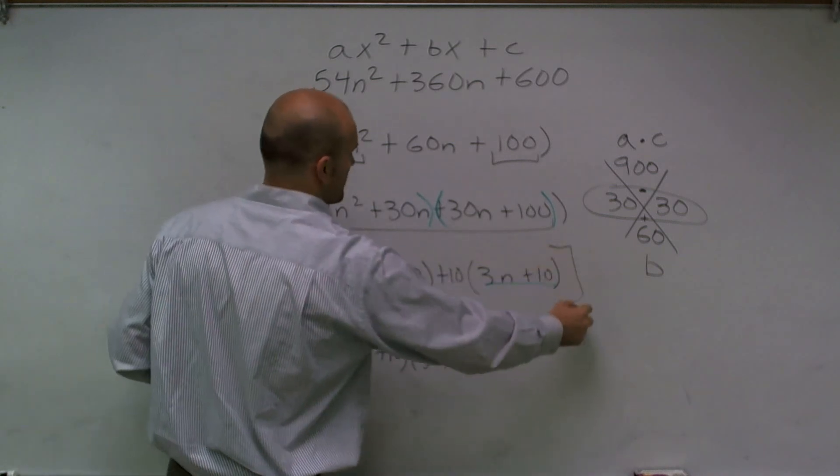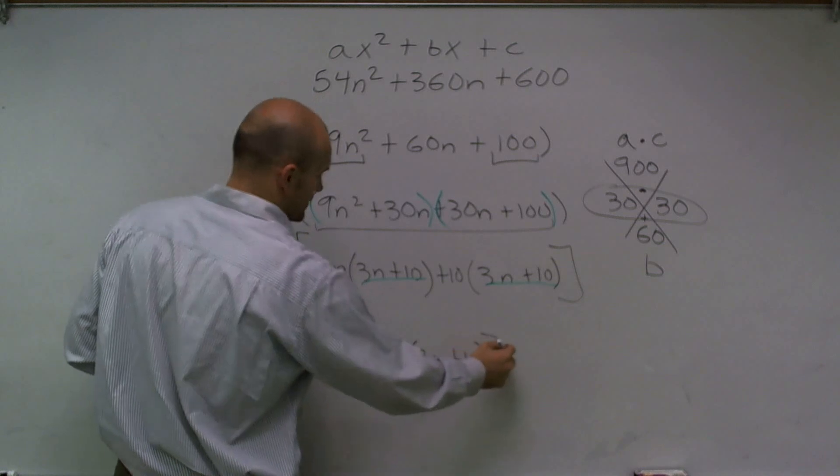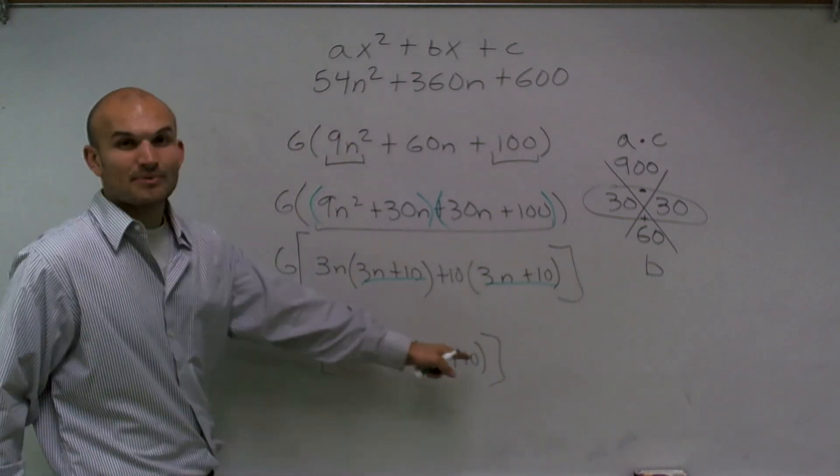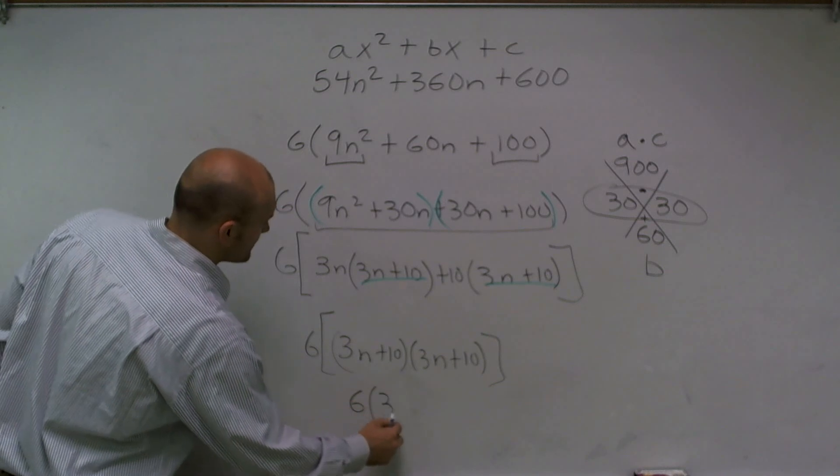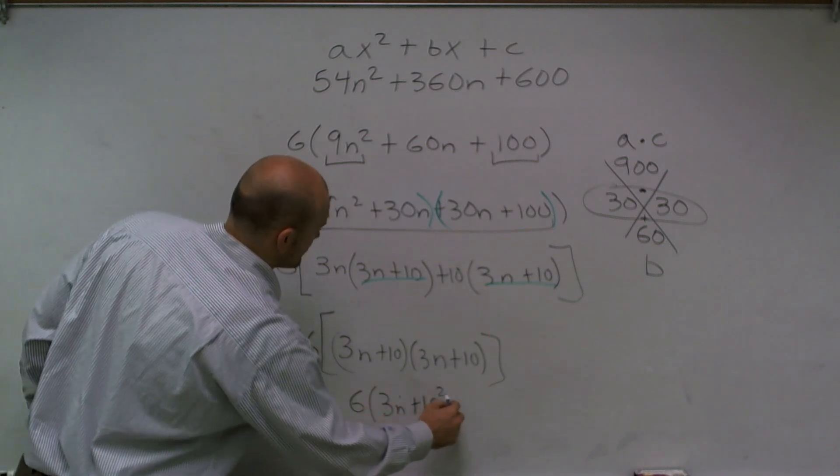Well, 3n plus 10, let's put parentheses around it, 3n plus 10 times 3n plus 10 is 3n plus 10 squared. So we have 3n plus 10 squared.